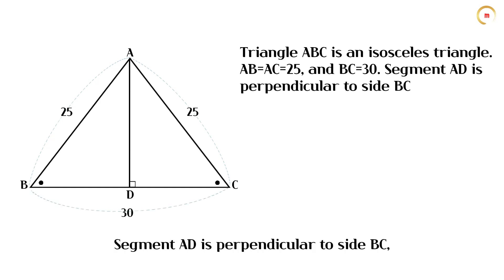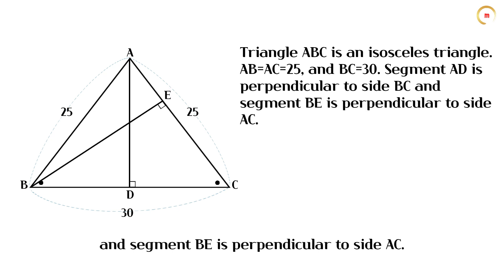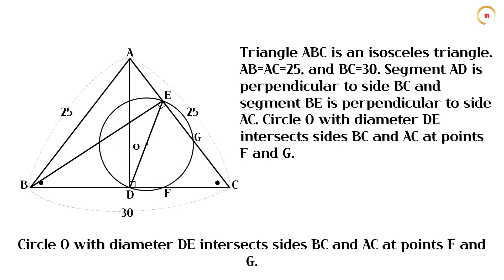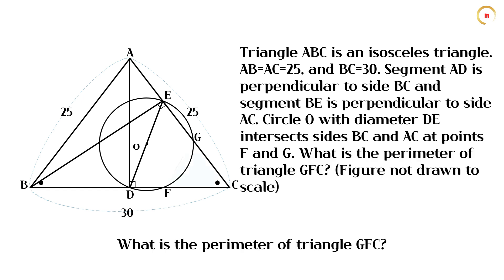Segment AD is perpendicular to side BC, and segment BE is perpendicular to side AC. Circle O with diameter DE intersects sides BC and AC at points F and G. What is the perimeter of triangle GFC?